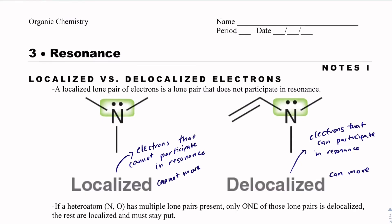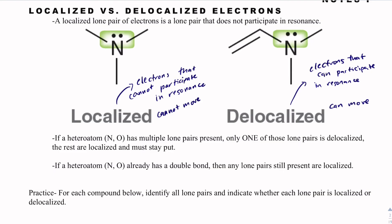Okay, so some important things. Heteroatoms are going to be our atoms that are not carbon and hydrogen, and most of the time, they're going to have lone pairs of electrons. So if a heteroatom, such as nitrogen or oxygen, has multiple lone pairs, only one of those lone pairs can be delocalized. The rest are localized. Additionally, if a heteroatom already has a double bond, then any remaining lone pairs have to be localized.